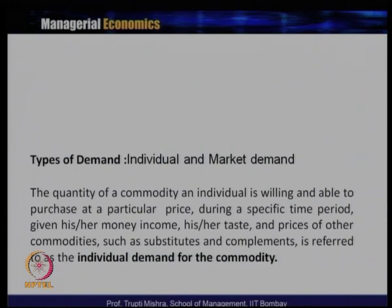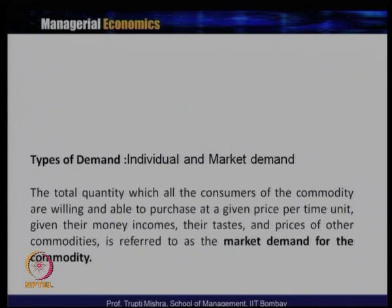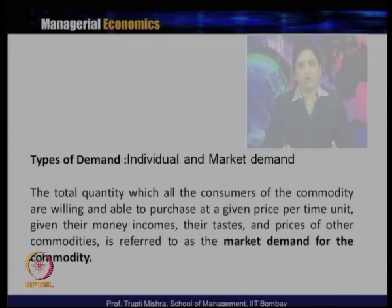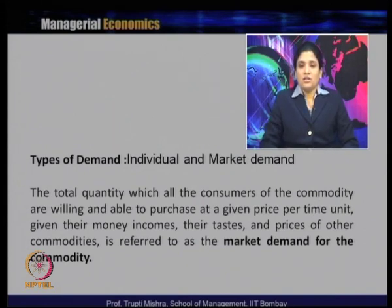If a product's consumption is not dependent on any other product, it is a normal good; otherwise we get two categories: substitute goods and complementary goods. Considering individual demand, irrespective of substitute or complementary goods, whatever the consumer demands of a typical commodity at any specific time period — for example, your grocery demand per month — that becomes the individual demand corresponding to the prices of different items.